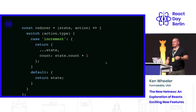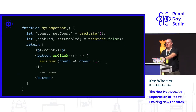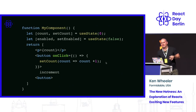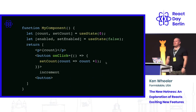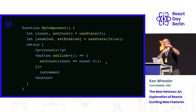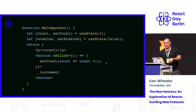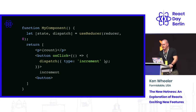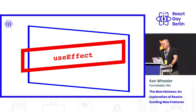There are a couple of gotchas with hooks. When you call the setter from useState, it does not merge state — unlike regular setState, which shallowly merges. With hooks, if you have multiple values in state and you set just one, it blows the rest away. So you have to manually spread the existing state in. Just want to save you some debugging time when you play with it.